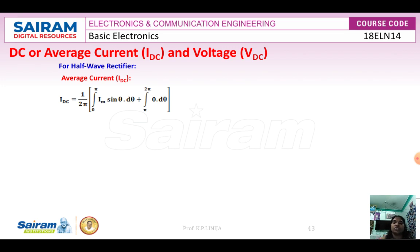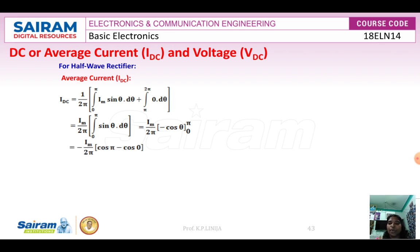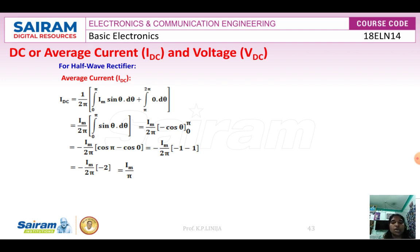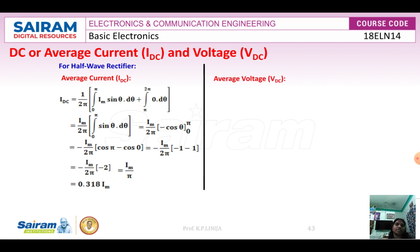After integration, the integral of sin(θ) is −cos(θ), evaluated from 0 to π. Applying the upper limit minus the lower limit, the IDC value — that is, average or DC current for the half wave rectifier — comes out to Im divided by π. Substituting the value of π as approximately 3.14, we get 0.318 × Im.